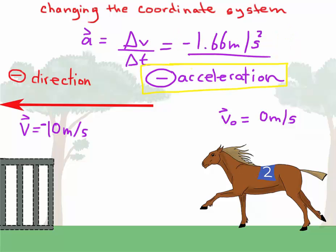Minus 1.66 meters per second squared. As you can see this is not the same as deceleration which means slowing down. In this case the horse is actually speeding up towards the negative direction.